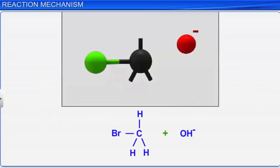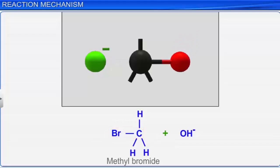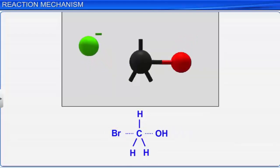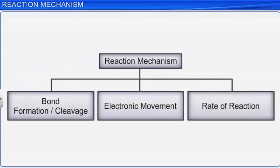The covalent bond between carbon and bromine of methyl bromide gets cleaved and a new bond between carbon and the hydroxide ion is formed. The energetics during breaking and forming of bonds, movement of electrons, and the rate of reaction in a sequential description are referred to as the reaction mechanism.